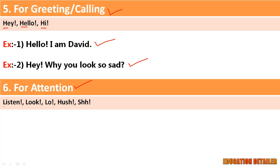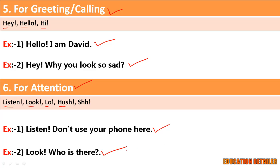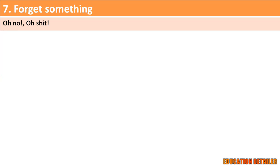Sixth, when we want to draw the attention of the listener, we use interjection words like listen, look, lo, hush, etc. For example: 'Listen, don't use your phone here.' and 'Look, who is there!'